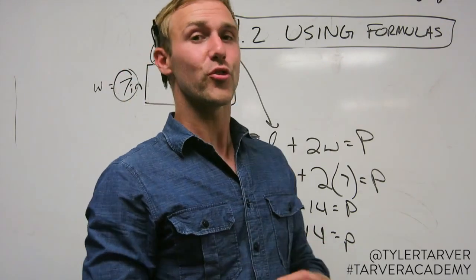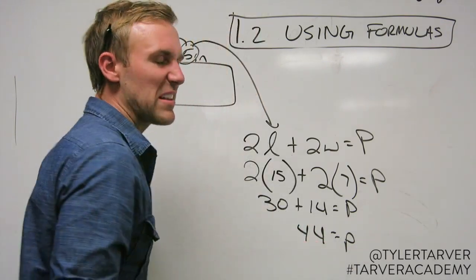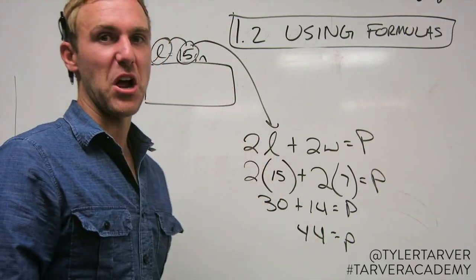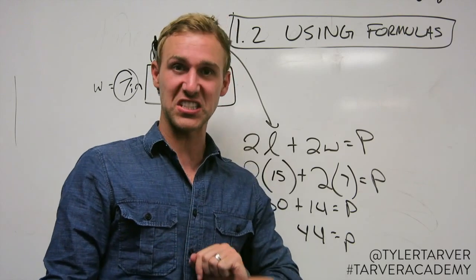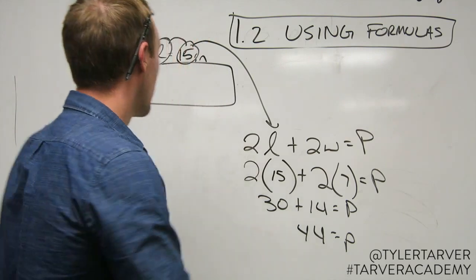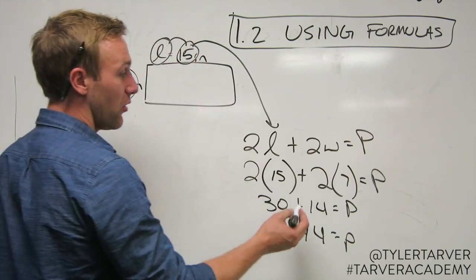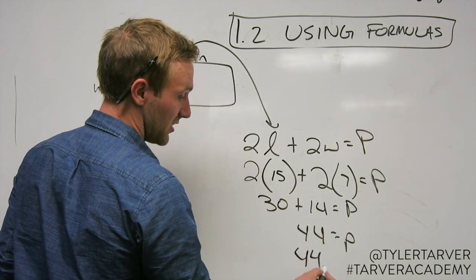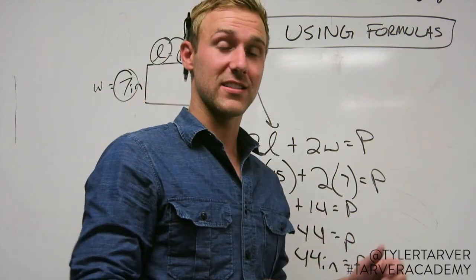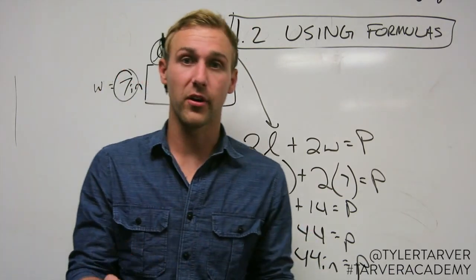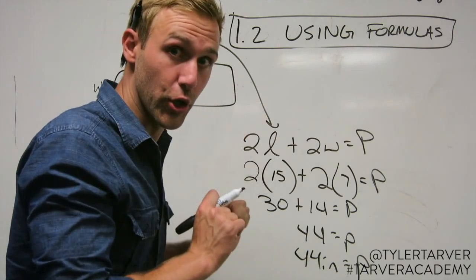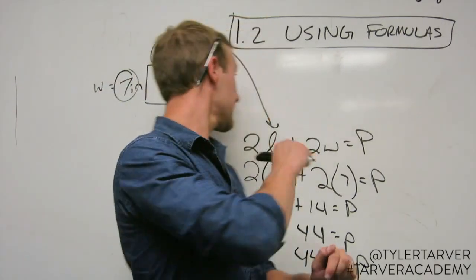Now if they're a stickler for the rules, they'll say what's the measurement — are you measuring in feet or miles? Well, we know it's inches. Whenever we multiply it, it's going to still be inches. So the answer is 44 inches. That's the measure of that. Using that formula, we found the perimeter — the distance all the way around it.